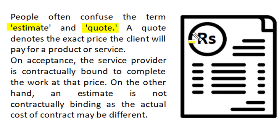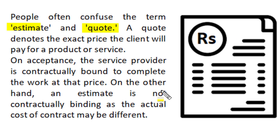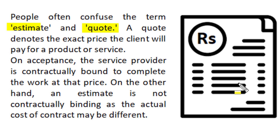On the other hand, an estimate is not a contractual bound to any party — it gives an idea to form a quotation, and there may be a little difference between the price and cost quoted versus the price and cost estimated. So estimation is not a contractual bounding, whereas a quotation will become a contractual bounding between two parties.